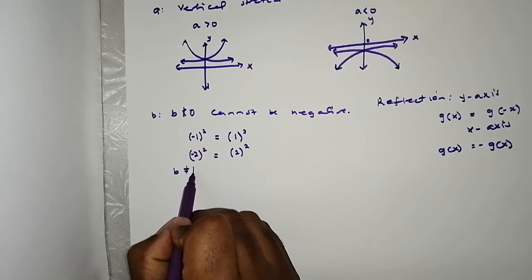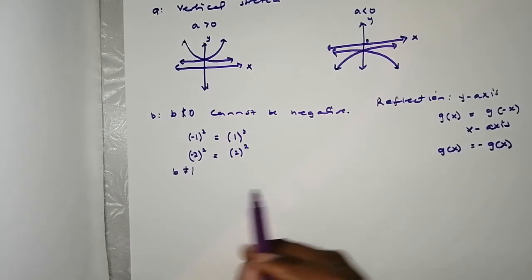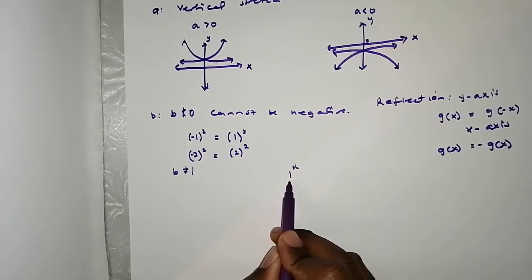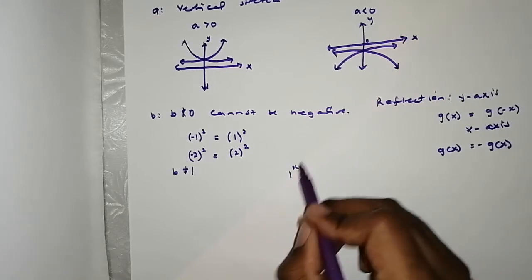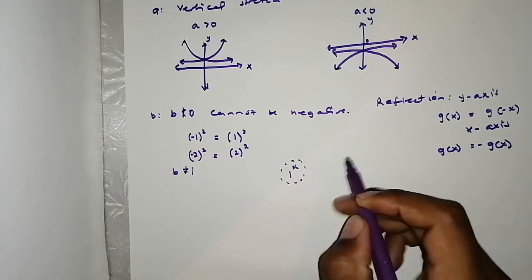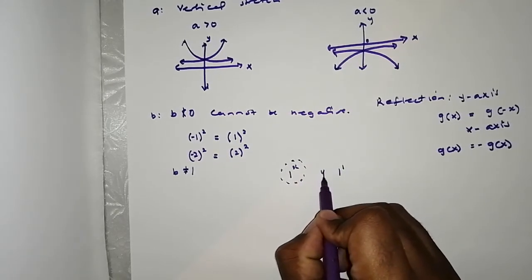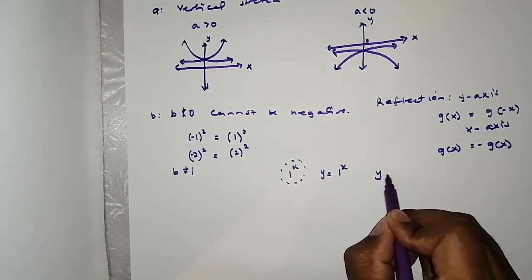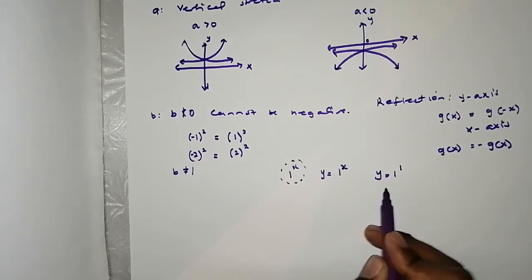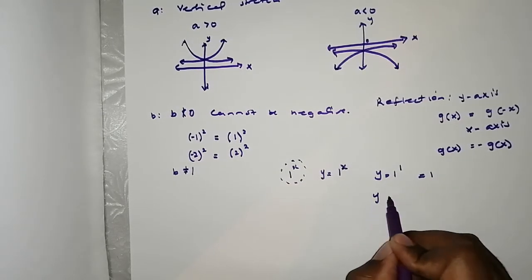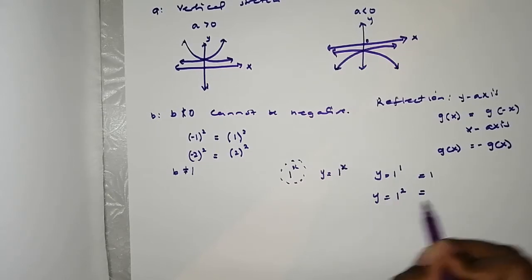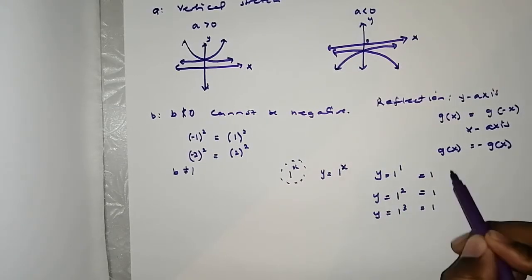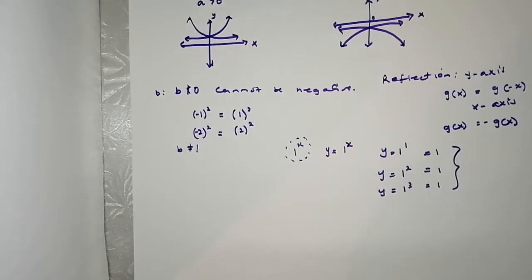Also, B cannot equal 1. If B equals 1, imagine 1 to the power of something — it's not going to be an exponential function. For example, Y equals 1 to the X: Y equals 1 to the 1 gives Y equals 1; Y equals 1 to the 2 gives Y equals 1; Y equals 1 to the 3 also gives Y equals 1. This is not the behavior of an exponential function.